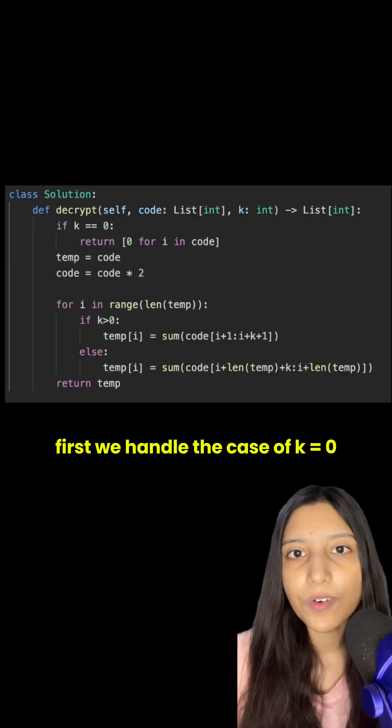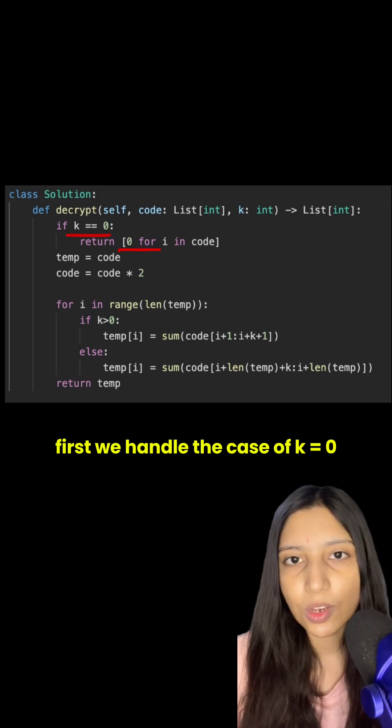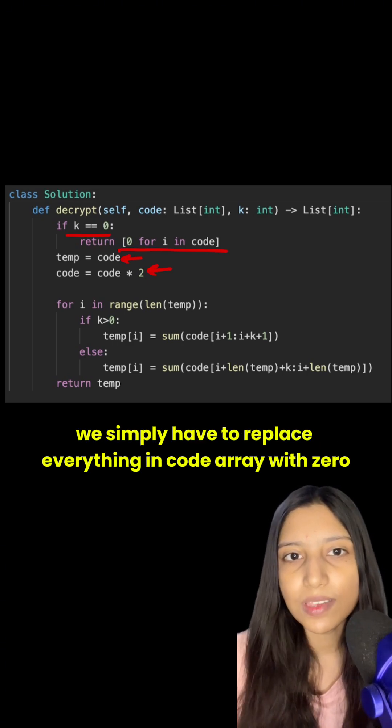Now the code will look like this. First we handle the case of k equals 0. We simply have to replace everything in code with 0.